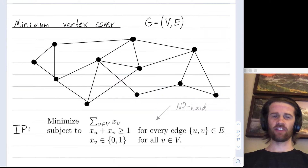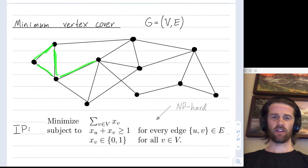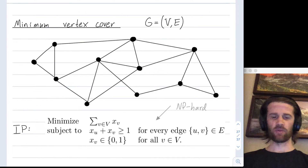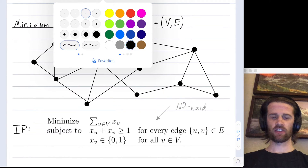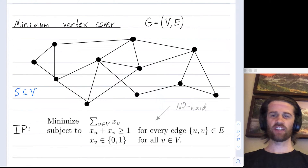Capital G is our graph drawn here. It has a vertex set capital V, and all of these points are the vertices. It also has an edge set capital E, and all of these are the edges.